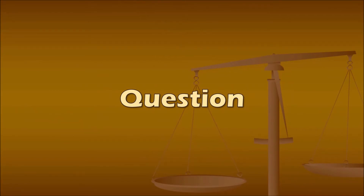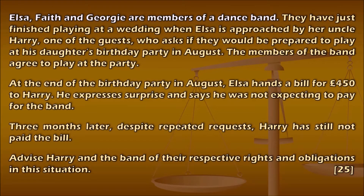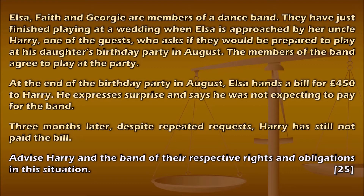The question reads: Elsa, Faith, and Georgie are members of a dance band. They have just finished playing at a wedding when Elsa is approached by Uncle Harry, one of the guests, who asked if they would be prepared to play at his daughter's birthday party in August. The members of the band agreed to play at the party. At the end of the birthday party in August, Elsa hands a bill for £450 to Harry. He expresses surprise and says he was not expecting to pay for the band. Three months later, despite repeated requests, Harry has still not paid the bill. Advise Harry and the band of their respective rights and obligations in this situation. 25 marks.